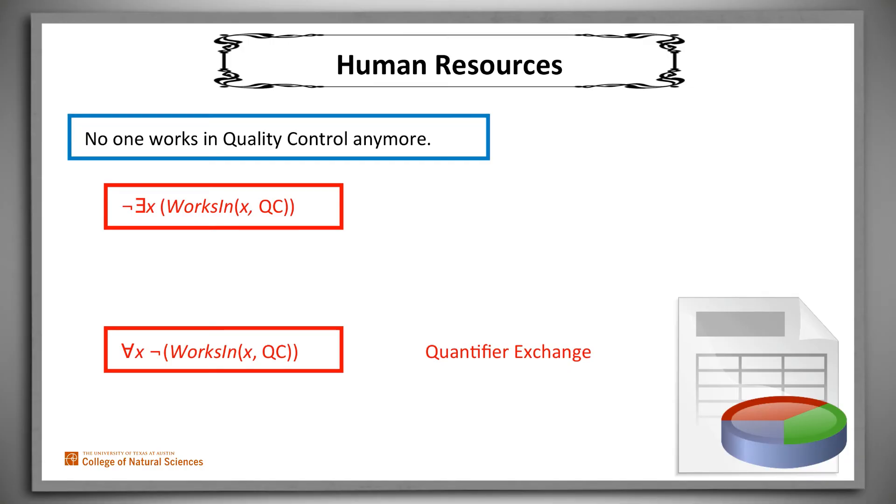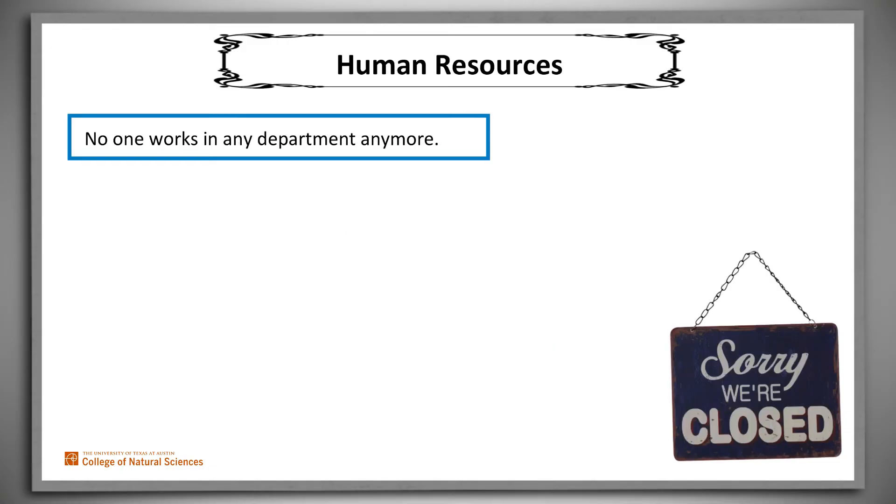Now let's say that things have gone downhill even farther in our company. No one works in any department anymore. Now we can write: there exists no x, y pair such that x works in y.